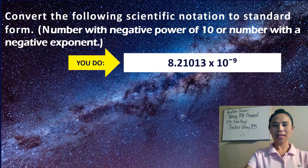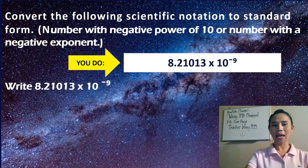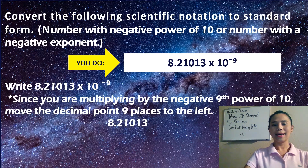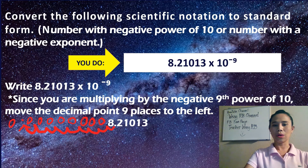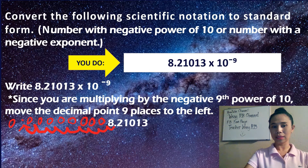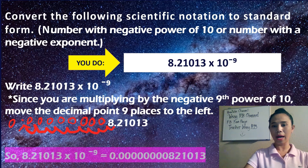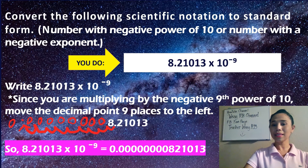Let's check your work. You have 8.21013 times 10 to the negative 9, and then we move the decimal place to the left. So you should be getting 0.00000000821013. We moved from the decimal point after 8, going to the left — 8 zeros, and including 8 would be 9 places. I hope that's getting better.